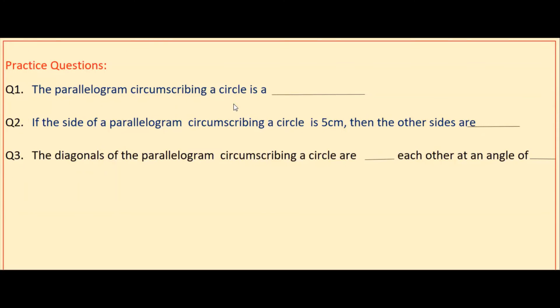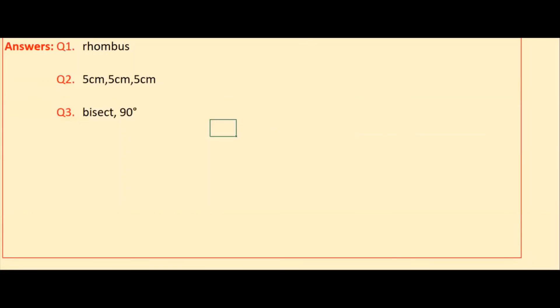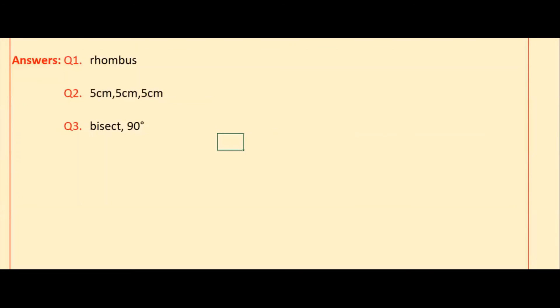Please do these practice questions. Here are the answers. For the third one, it is a rhombus, so the diagonals bisect each other at 90 degrees.